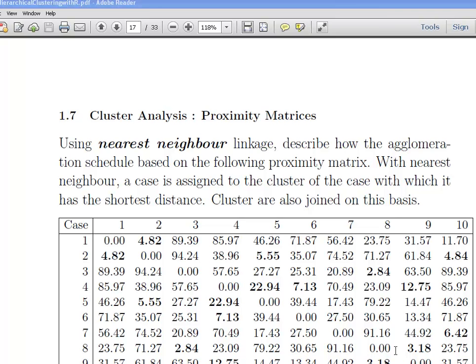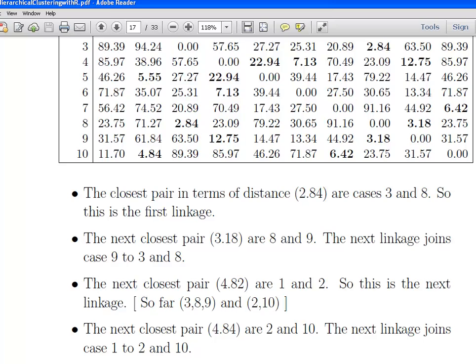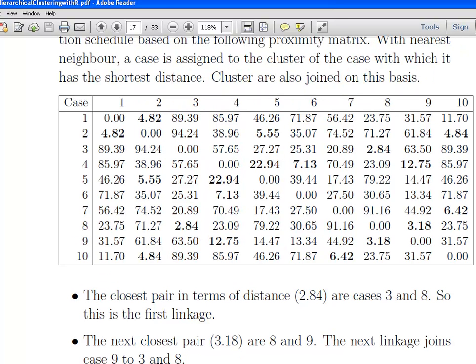We're going to look at one particular linkage method called the nearest neighbor. There are other types of linkage methods. We're going to have a quick look at this one for 10 cases. So this is a proximity matrix. Those are the distance measures for 10 cases. There are zeros along the diagonal.